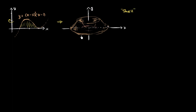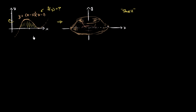The reason we're going to use the shell method — in the past, when rotating things around a vertical line, we used the disk method: we wrote everything as a function of y and created disks, figuring out the volume of each. But the problem here is this function is hard to express as a function of y, so instead we're going to keep things in terms of x and use a different geometric visualization to find the volume.